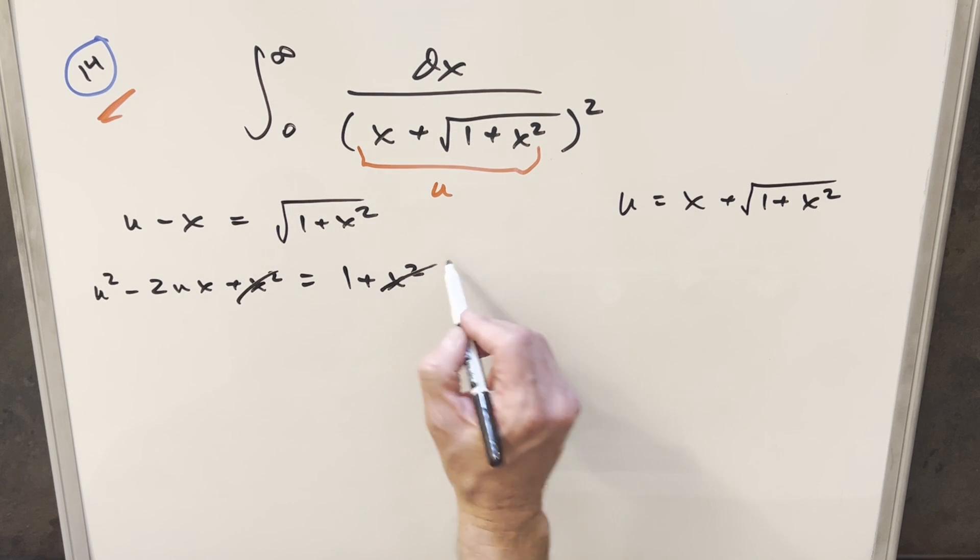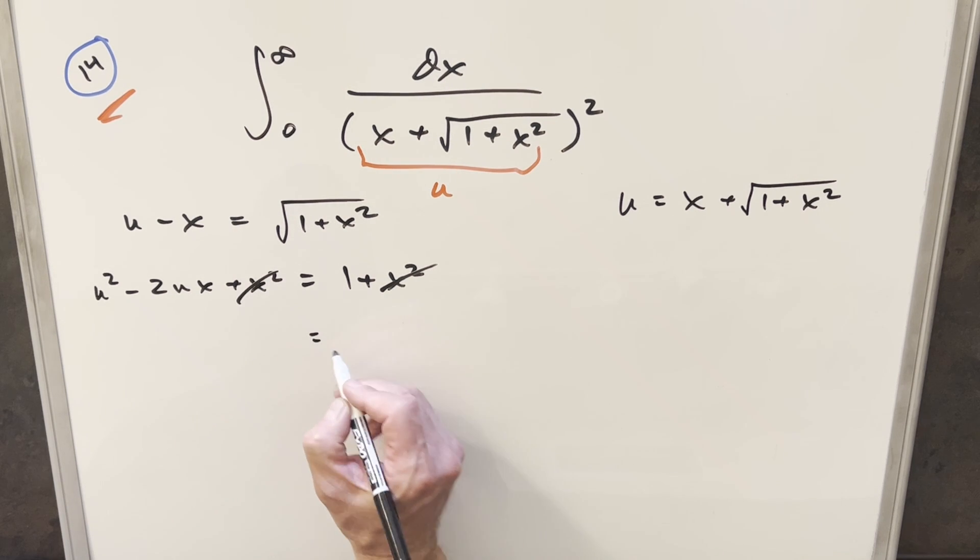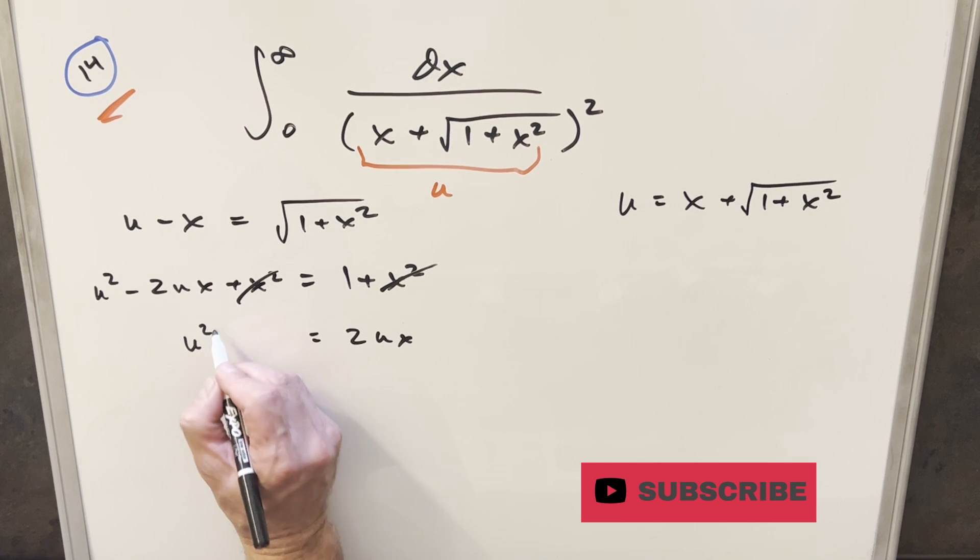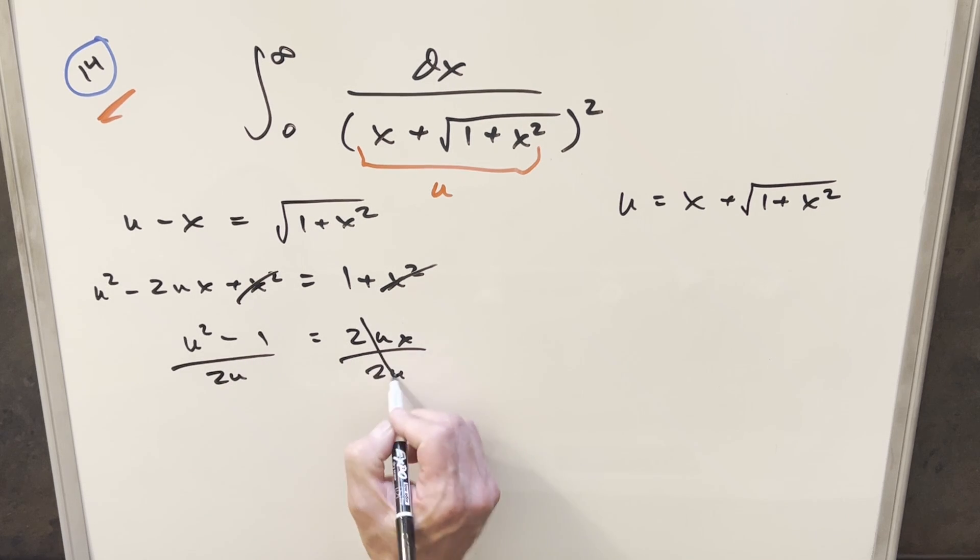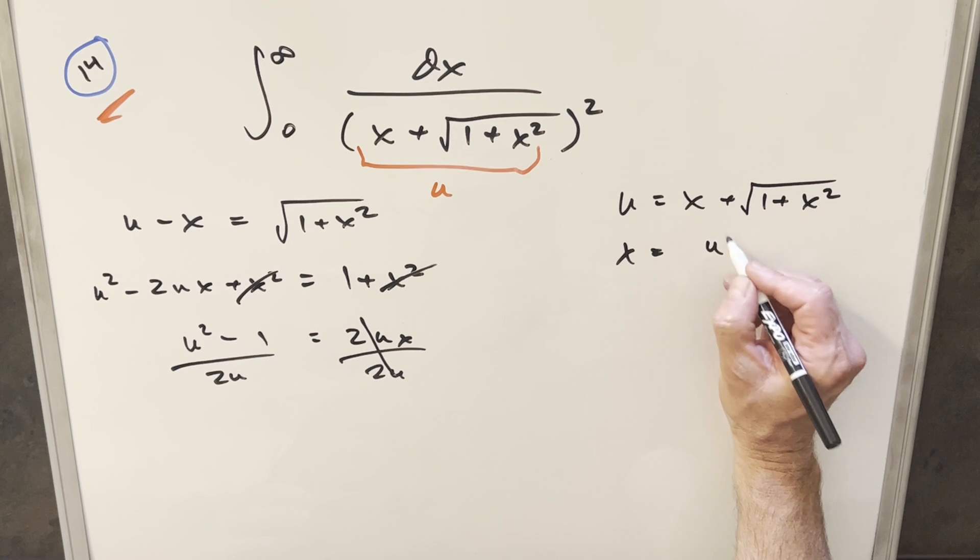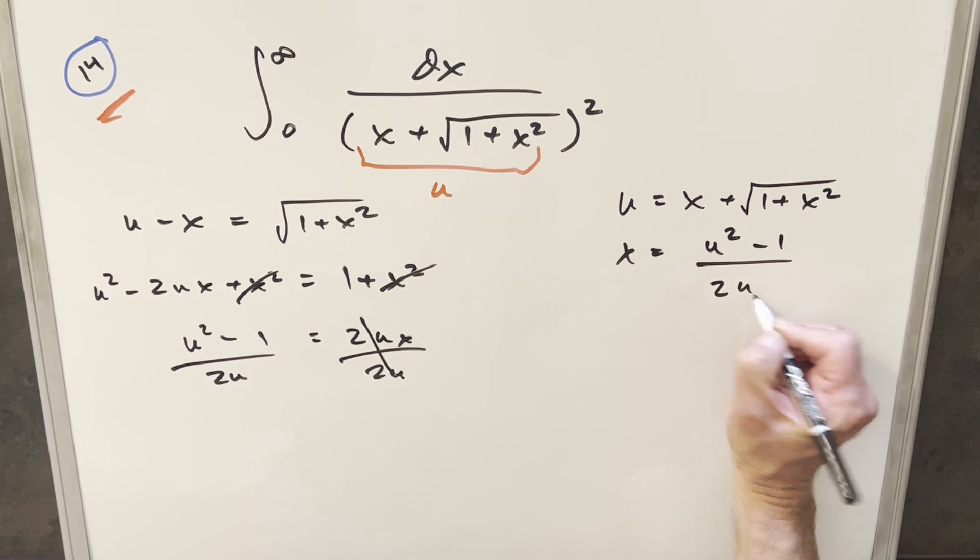x squared's canceled here. I'll add this 2u x on both sides, so over here on the right, we'll get 2u x. I'll subtract the minus 1, and over here, we have u squared minus 1. Then I can just divide off the 2u. That'll cancel. And so for our x value, we just have u squared minus 1 over 2u.